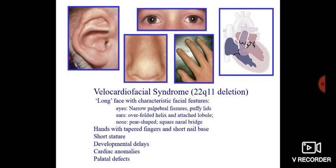For example, in velocardiofacial syndrome, there can be cardiac anomalies, palatal defect, developmental delays, and characteristic facies, which includes normal narrow palpebral fissure, overfolded helix, and puffy lids.